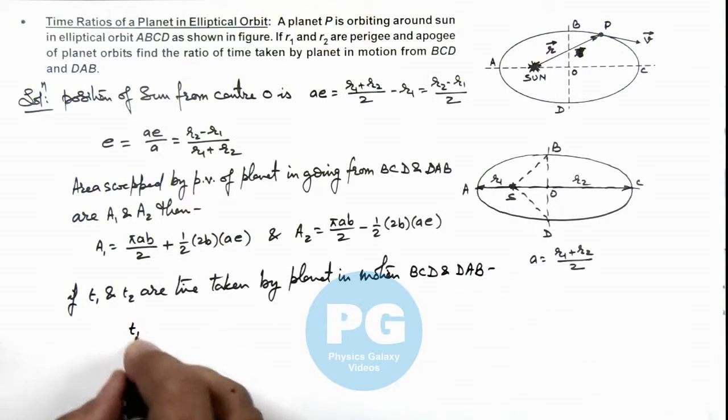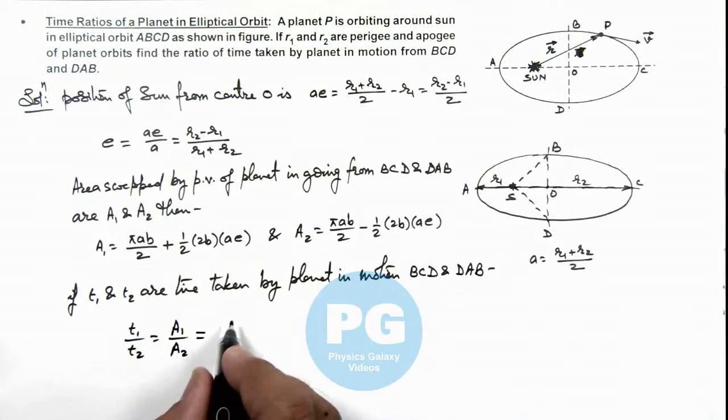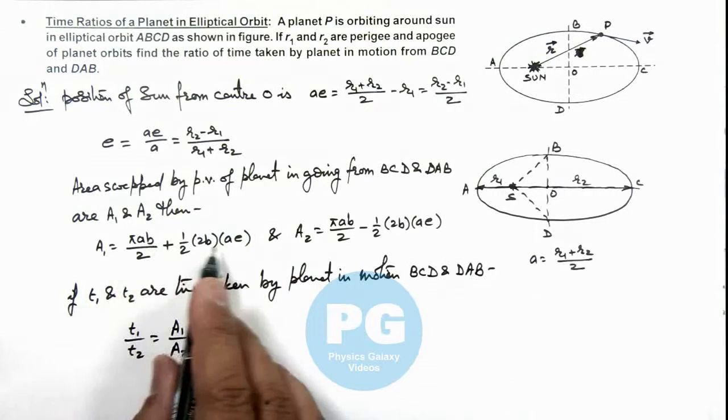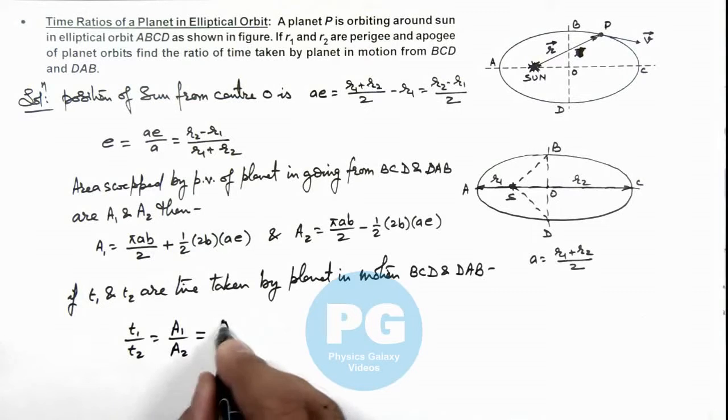Then we can write t1 by t2 will be equal to A1 by A2. On substituting the values, you can see here πab by 2 gets cancelled out, and we are getting it as π plus e upon π minus e.